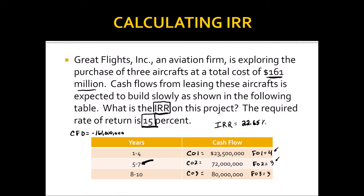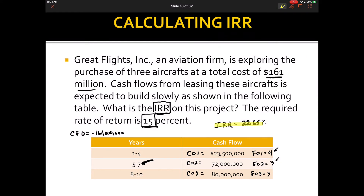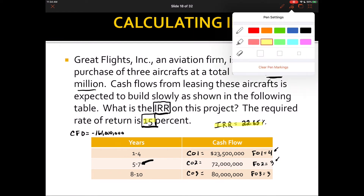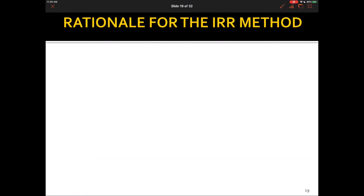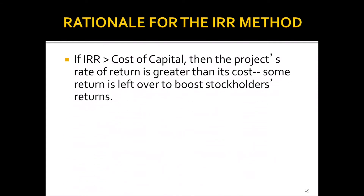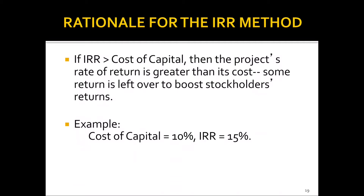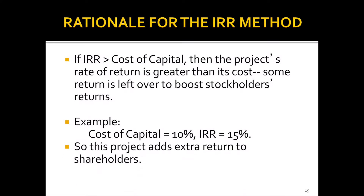The IRR of 22.65% exceeds the required rate of return of 15%, so this project would be accepted. The rationale: if IRR is greater than the cost of capital, the project's rate of return exceeds its cost, leaving some return to boost stockholders' returns. For example, if cost of capital is 10% and IRR is 15%, the project adds extra return to shareholders and would be accepted.